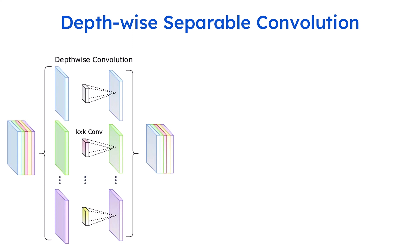Let's see how this works in real practice. Suppose you are given an input, and your input dimension — for a single channel — if it is a square, I say it is df × df, where df is the height and width. So df × df and the total number of channels is m. So you have an input image of size df × df with m number of channels.